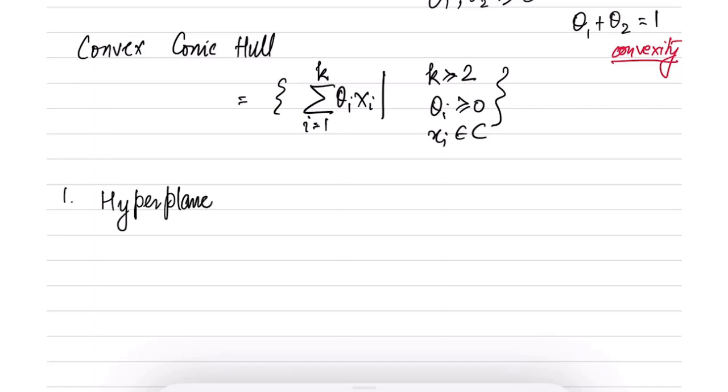So we have the hyperplane, also called plane. This is the set of all x in Rn such that A transpose x is equal to b. In other words, I am only specifying a single equation.